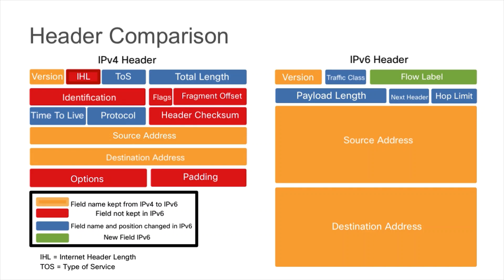Several fields were left out of IPv6: the identification, flags, fragment offset, and header checksum. The identification, flags, and fragment offset were used for packet fragmentation. In IPv6, fragmentation is the responsibility of the host — the host performs path MTU discovery prior to sending packets to determine the appropriate packet size, rather than relying on the network. The header checksum was removed because the upper layer protocols, TCP and UDP, perform the checksum.